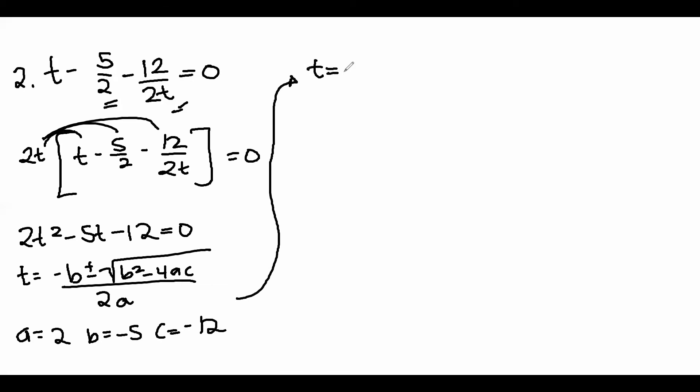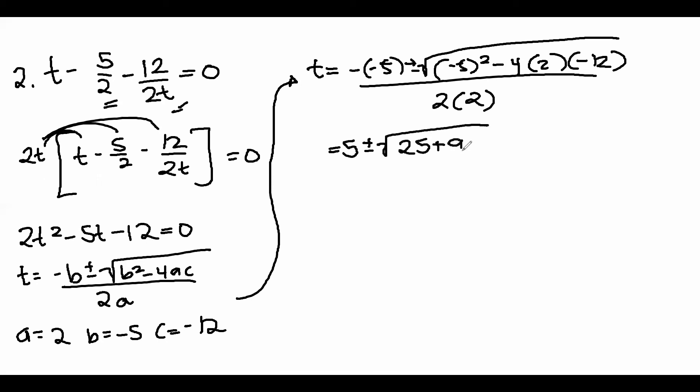Let's substitute the coefficients to the formula. Now, we have 5 plus minus square root of 25 plus 96 all over 4. 5 plus minus square root of 121 over 4, which will give us 5 plus and minus 11 over 4.